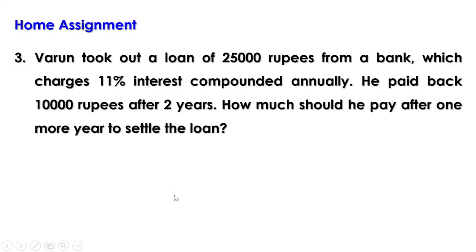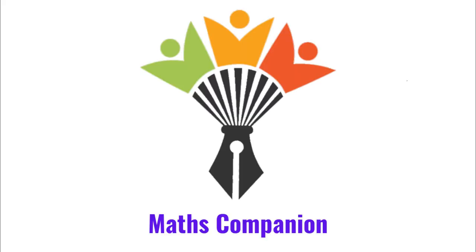Now a homework: Vanoon took out a loan of 25,000 rupees from a bank which charges 11% interest compounded annually. He paid back 10,000 rupees after 2 years. How much should he pay after one more year to settle the loan? We shall discuss the remaining part in the next video. Till then, bye.